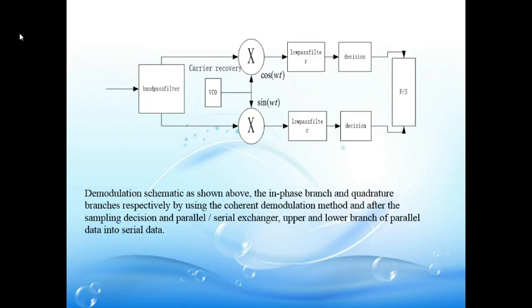According to QPSK signal modulation, QPSK demodulation can use a demodulation method similar to the two-PSK signal demodulation. The demodulation schematic is as shown in this picture. We can say the in-phase branch and quadrature branches, respectively, use the coherent demodulation method, and after the sampling, decision, and parallel-to-serial conversion, the upper and lower branch parallel data are converted into serial data.